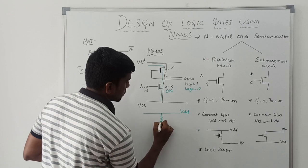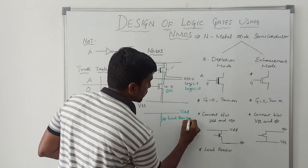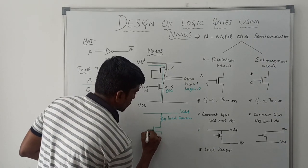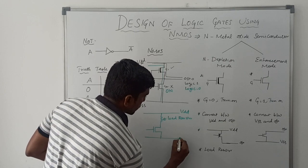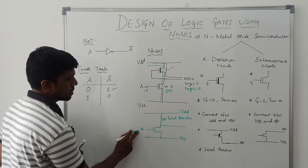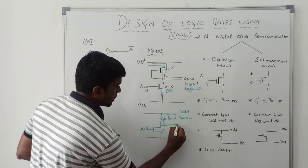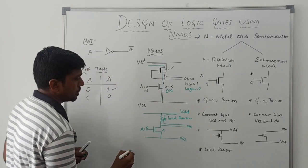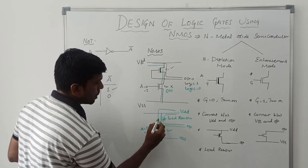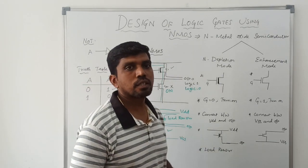This NMOS logic circuit can be replaced with an equivalent circuit using VDD and a load resistor instead of the depletion mode transistor. The enhancement mode transistor is connected between VSS and the output. When A equals 0, the transistor is turned off and VDD is directly connected to the output through the load resistor. When A equals 1, the transistor is turned on and VDD is connected to ground through the load resistor and the enhancement mode transistor.